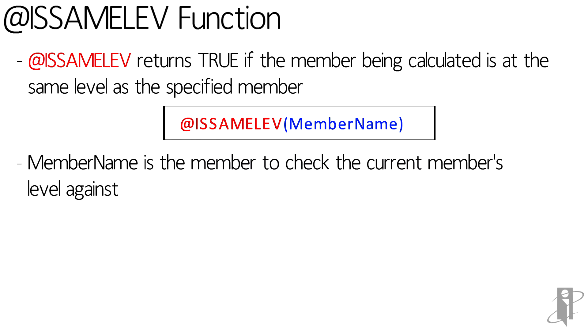Remember that levels count from the bottom upward in the outline, so the very bottom of a dimension where members have no children is level 0, the parents of those members are level 1, the parents of those members are level 2, and so on.